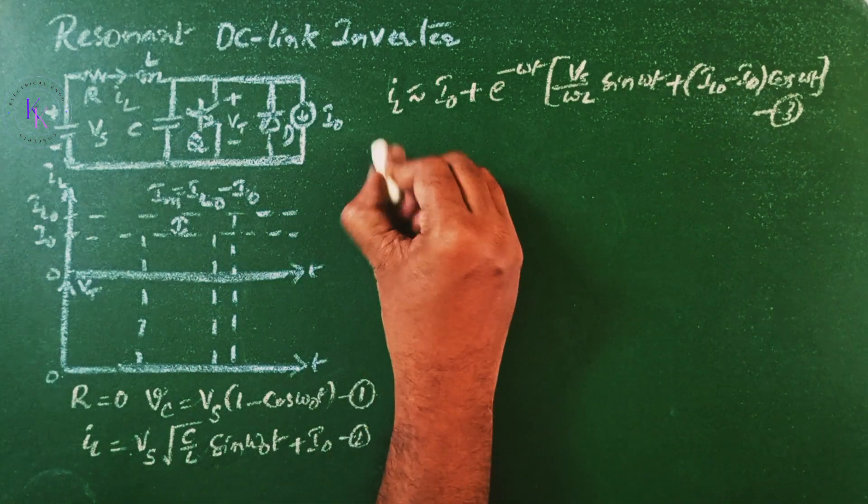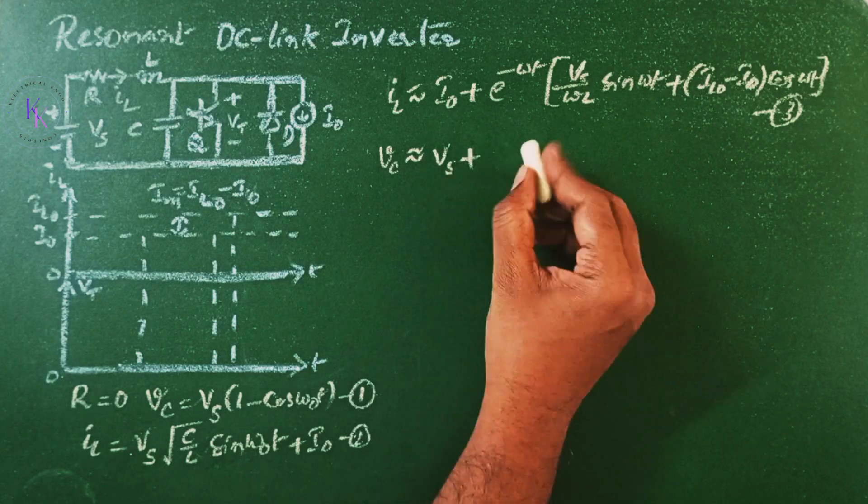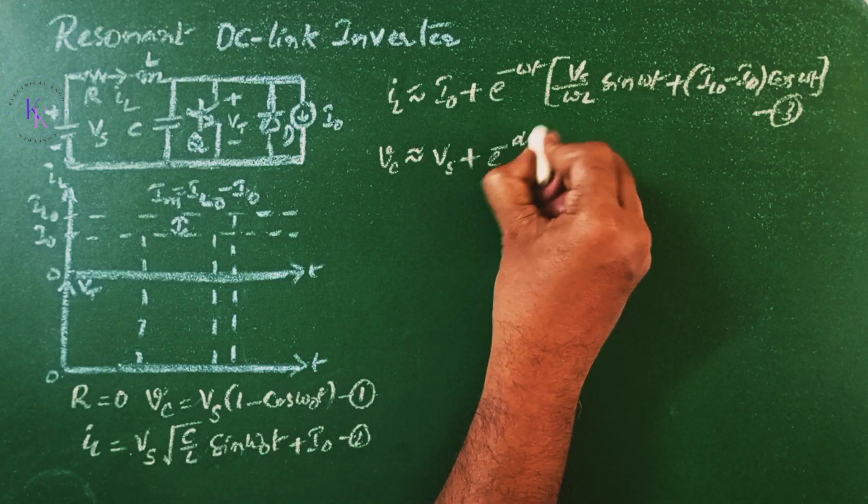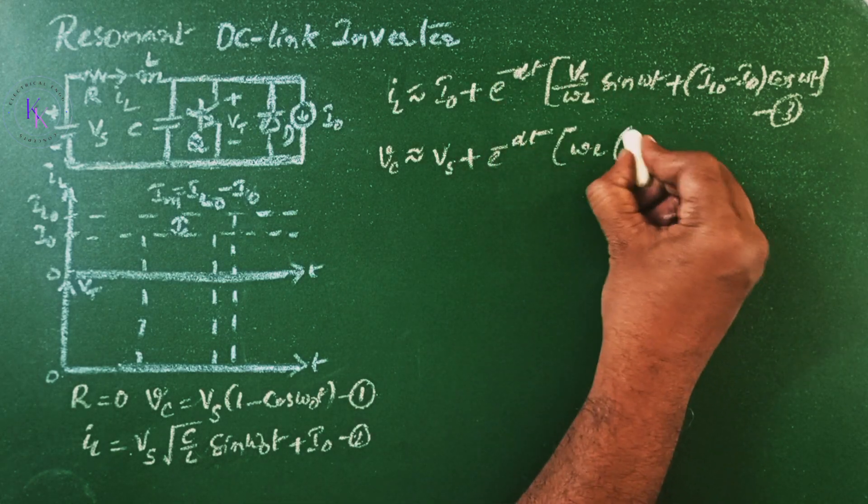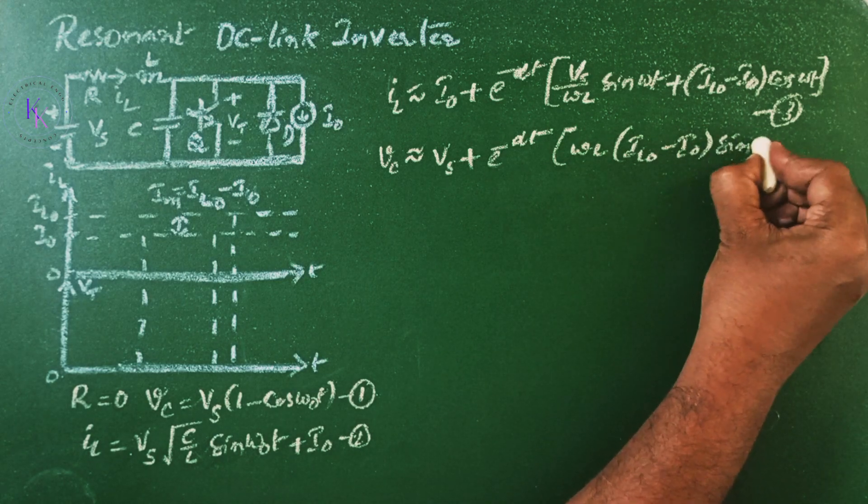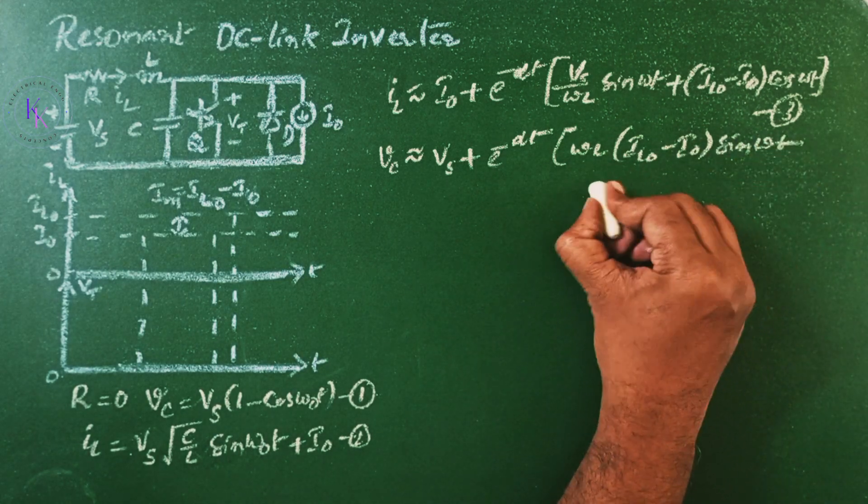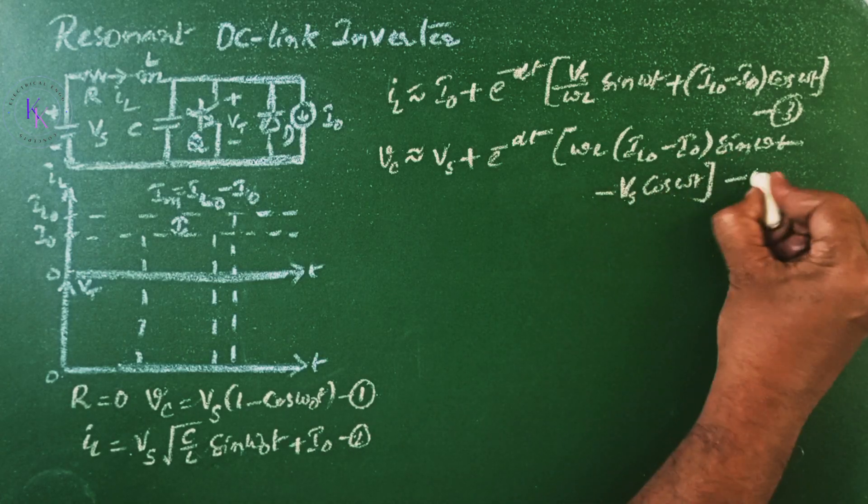And the capacitor voltage, Vc approximately equals to Vs plus E power minus alpha T of omega L, IL0 minus I0 sin omega T minus Vs cos omega T. Let this be equation number 4.